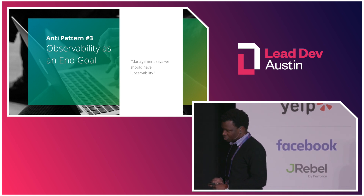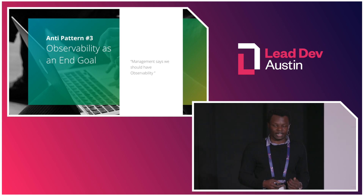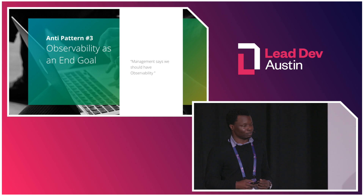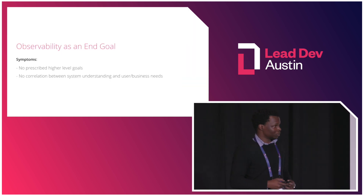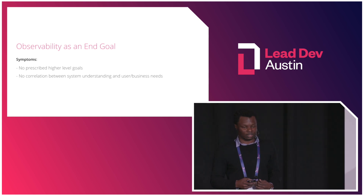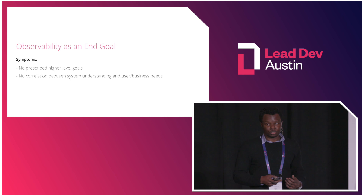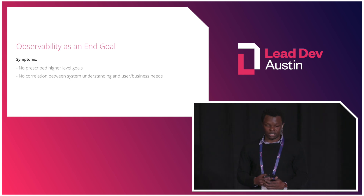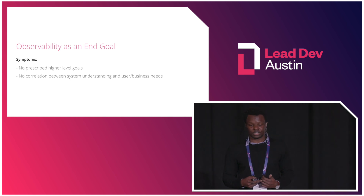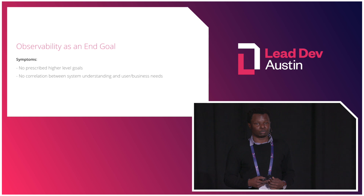The third anti-pattern is the idea that observability is an end goal in and of itself — and this is typically the result of some kind of middle management decree. Symptoms include having no prescribed higher-level goals and no correlation between better system understanding and user or business needs. The truth is there is no value in pursuing observability for its own sake — it's not an end goal. We have to be focused on what our business and users care about and on the quality of the services we need to deliver. Observability itself is just a means to help us achieve this.